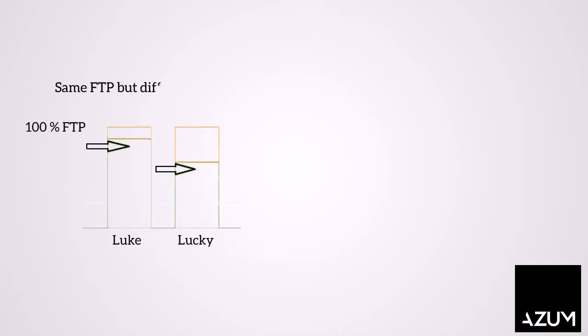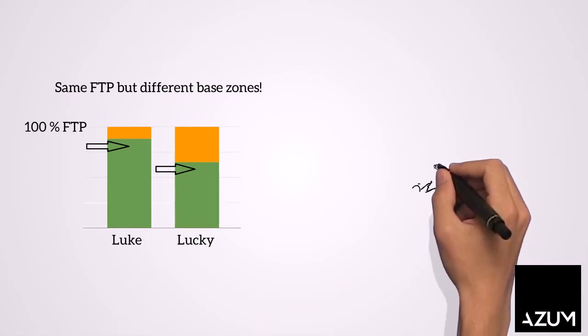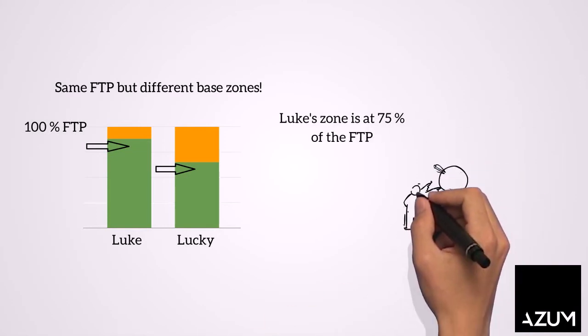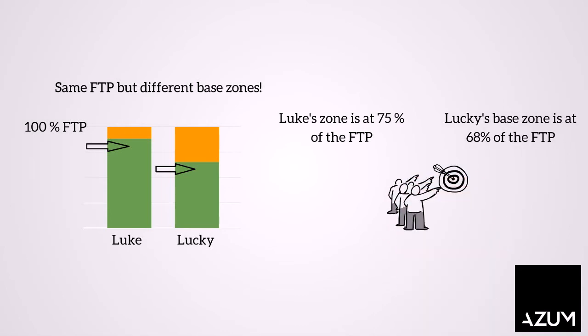So Lucky and Luke, although they have the same FTP, have different training zones. Luke's base zone is 75% of his FTP, whereas Lucky's base zone is 68% of his FTP.